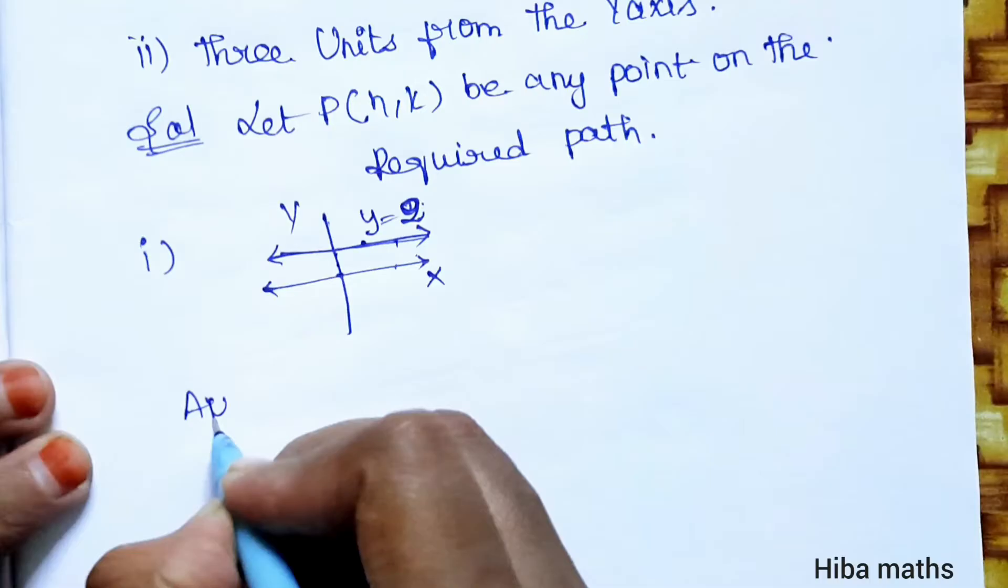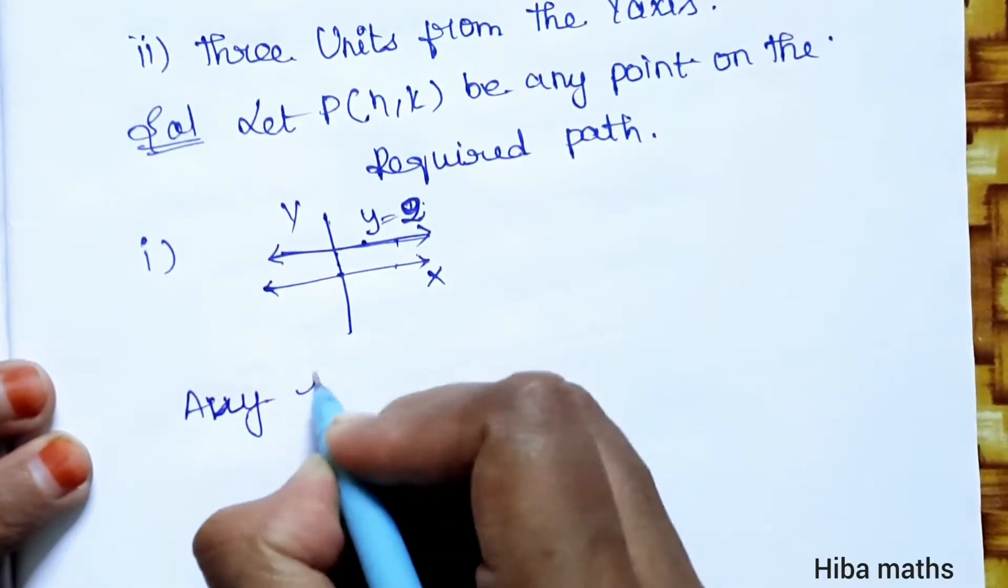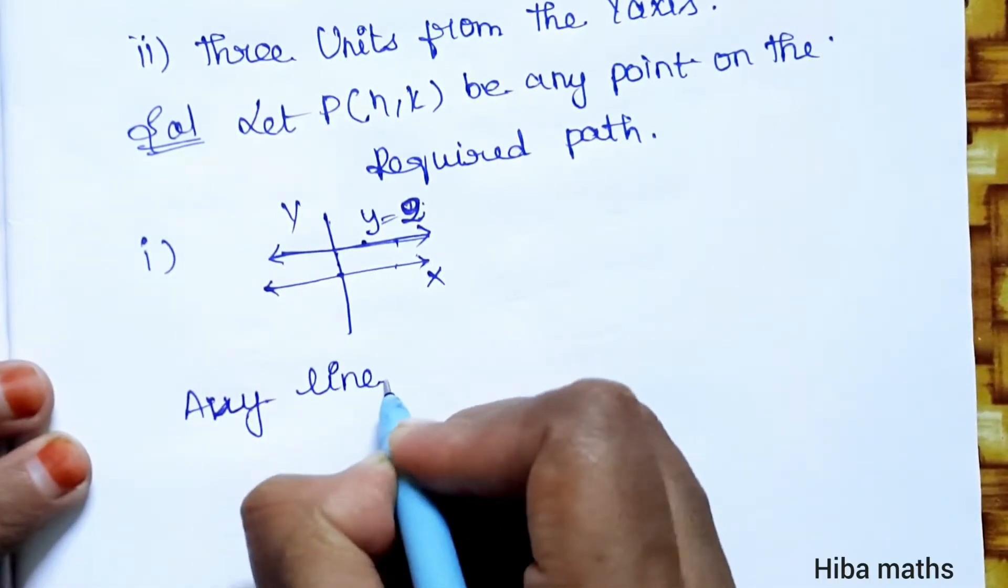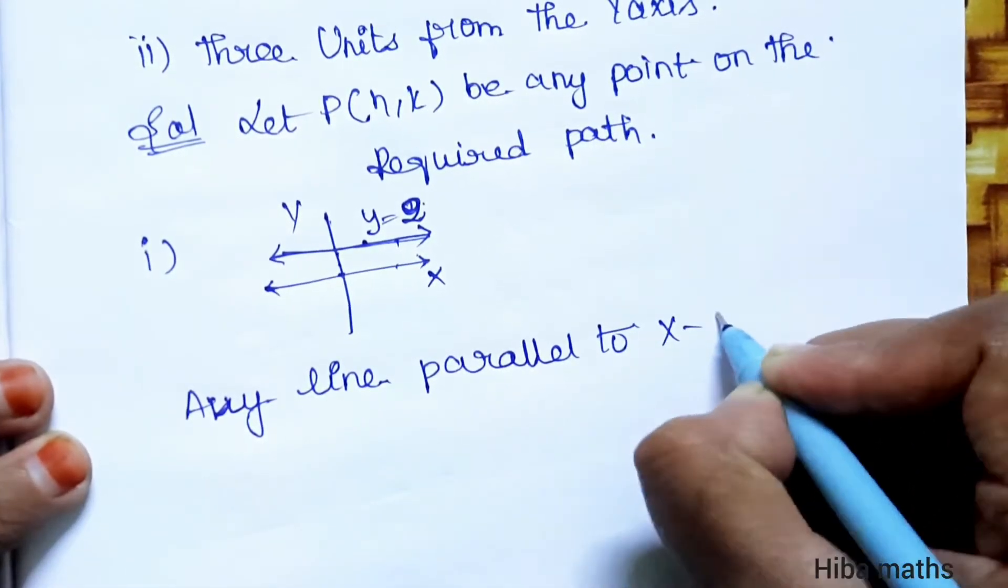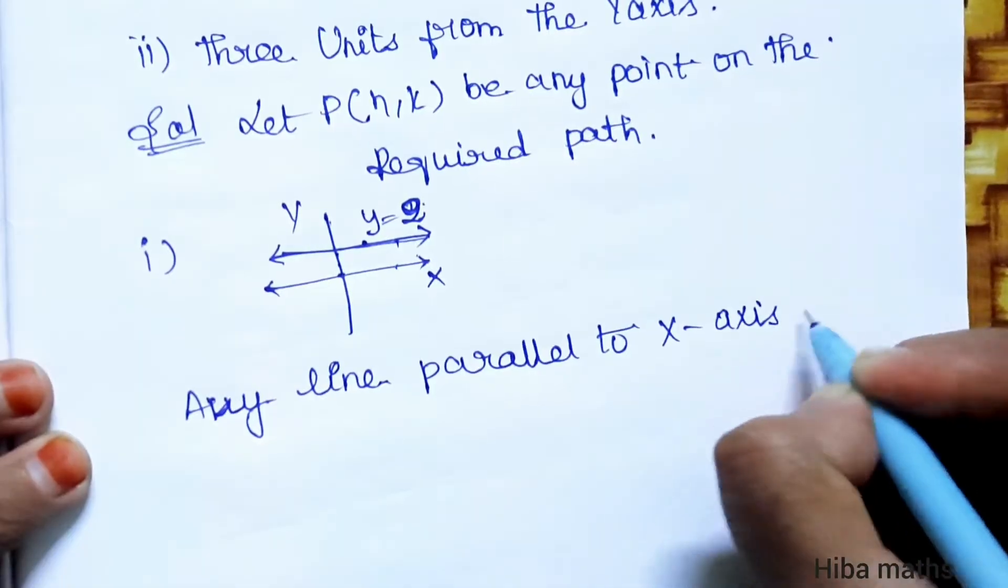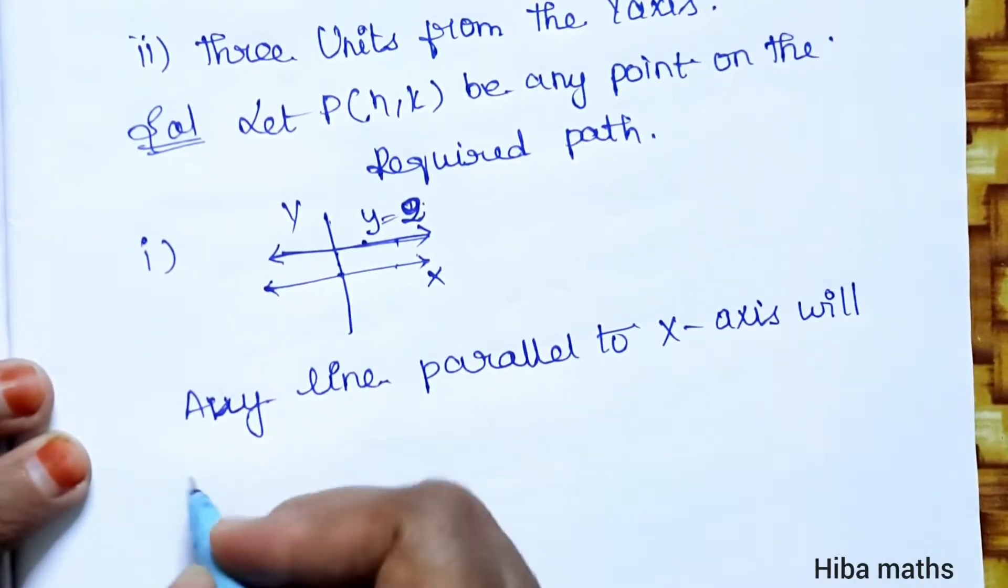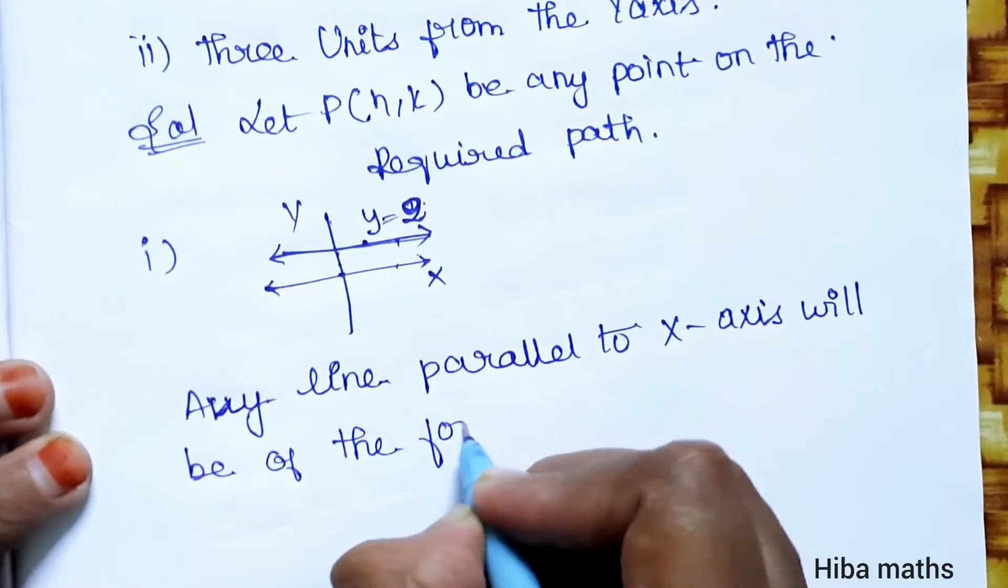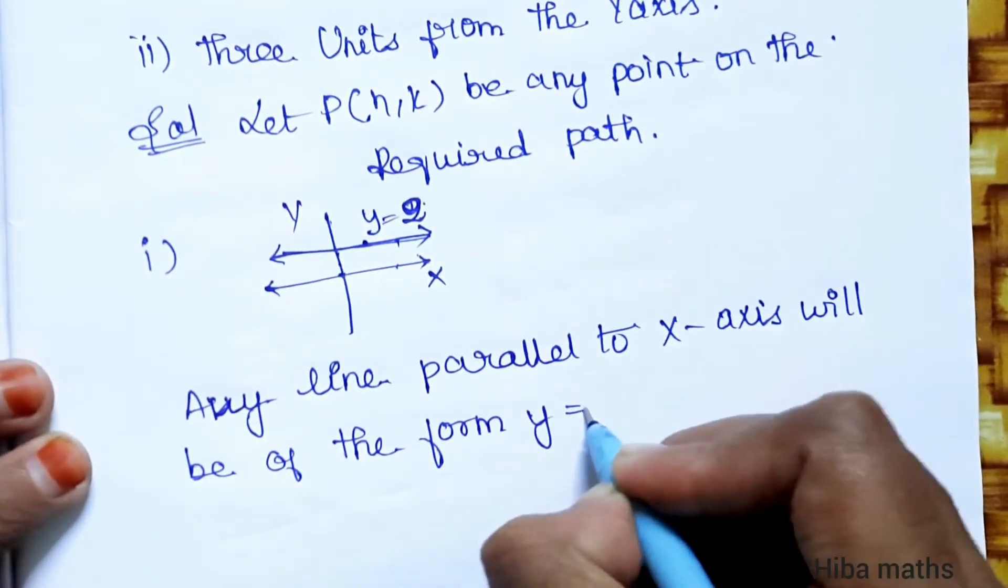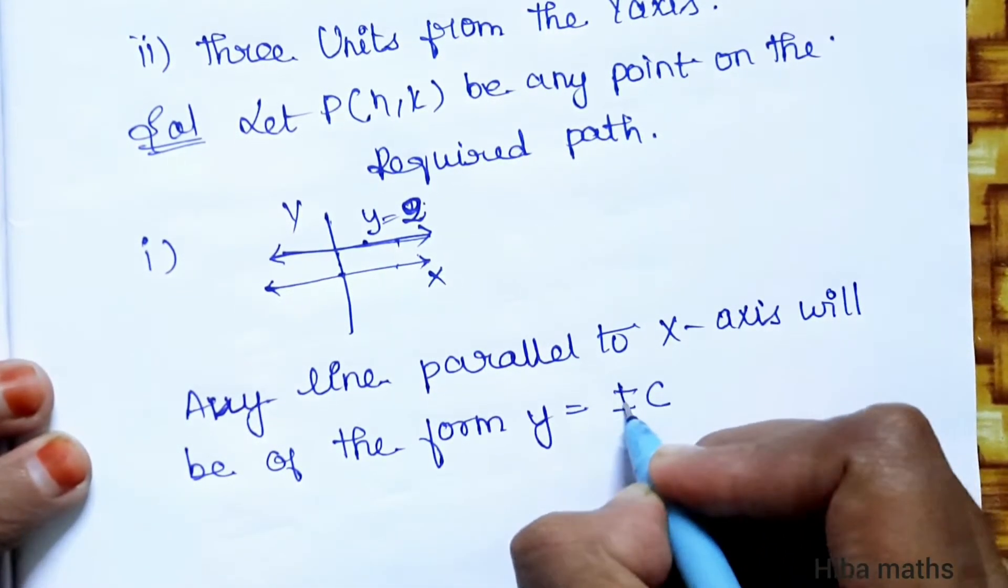Any line parallel to the x-axis will be of the form y equals plus or minus c, where c is the distance in units.